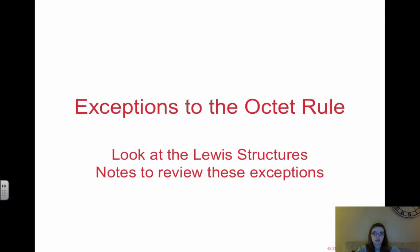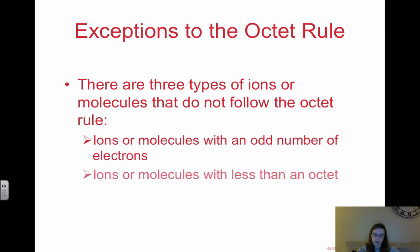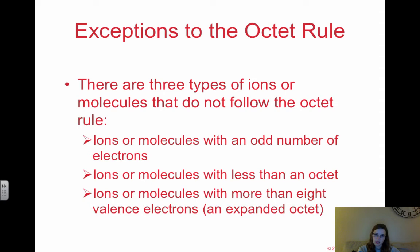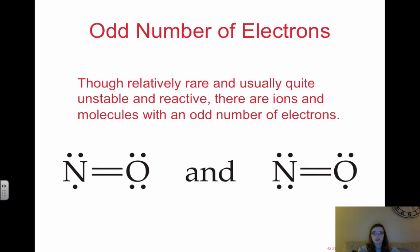Finally, we look at exceptions to the octet rule. There are three types of ions or molecules that do not follow the octet rule: first, ions or molecules with an odd number of electrons; second, molecules with less than an octet; and third, molecules with an expanded octet — more than eight valence electrons. Though relatively rare and usually unstable, some molecules have an odd number of electrons. For example, NO has an odd number of electrons, so one atom ends up with only a single electron rather than lone pairs and a full octet. This single electron on nitrogen makes it extremely unstable and reactive.